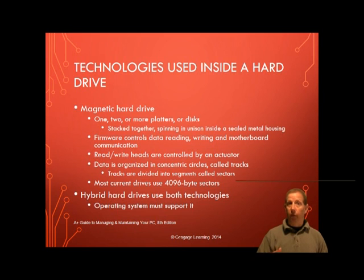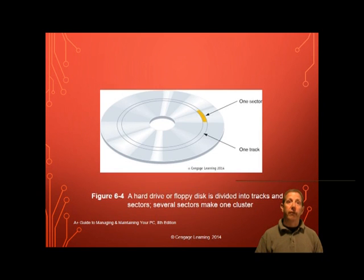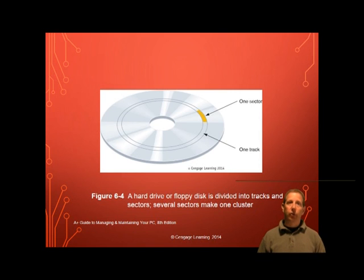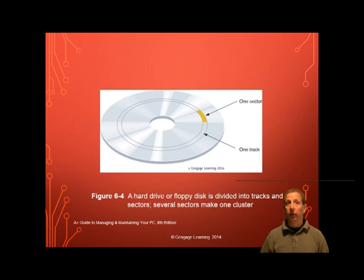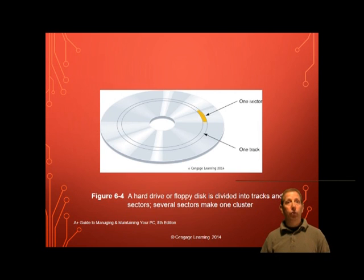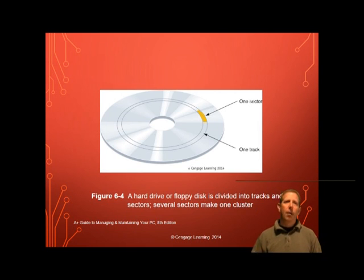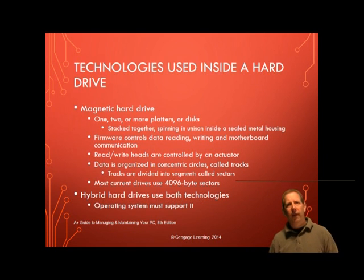The faster the spindle, the better performing the drive. Data is organized on a magnetic hard drive in concentric circles called tracks, and each track is divided into segments called sectors, sometimes also called records. Older hard drives use sectors that contain 512 bytes, but most current hard drives use 4096-byte sectors.